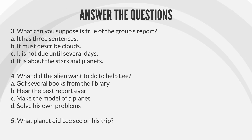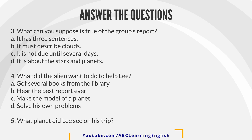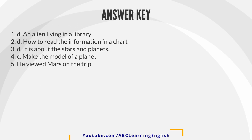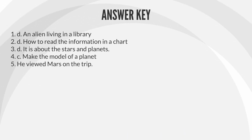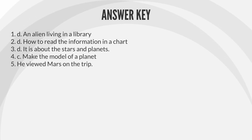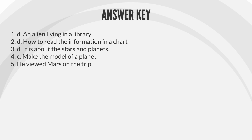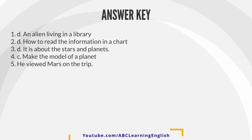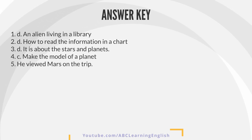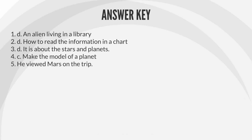Question 5: What planet did Lee see on his trip? Answers: 1. D — An alien living in a library. 2. D — How to read the information in a chart. 3. D — It is about the stars and planets. 4. C — Make the model of a planet. 5. He viewed Mars on the trip.